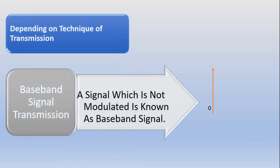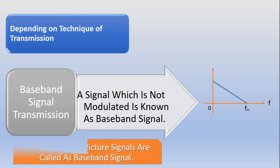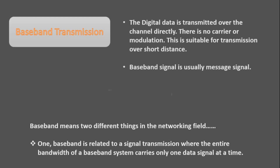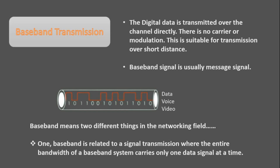Now let's talk about the third type of communication system, which is based on how we process our signal. If we transmit any signal without any modulation, that type of communication system is known as a baseband communication system. Baseband means two different things in the networking field. First, baseband is related to digital signal transmission where the entire bandwidth carries only one data signal at a time — every single signal requires exclusive use of the shared medium. When one user is using the medium, no one else can use it; they must wait for their turn. Ethernet is an example of a baseband system.